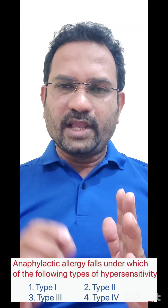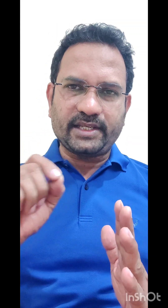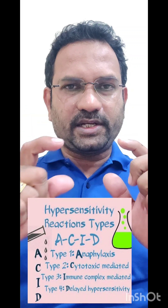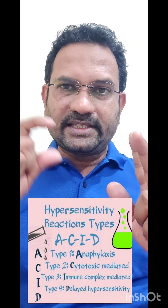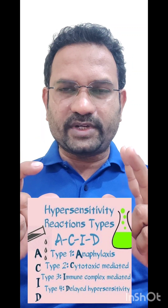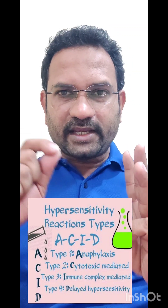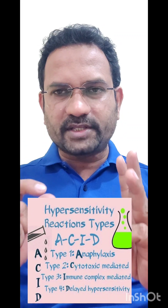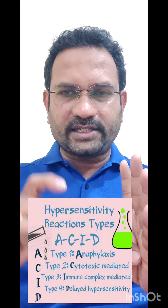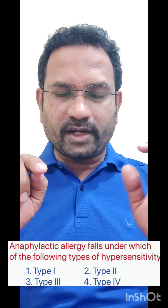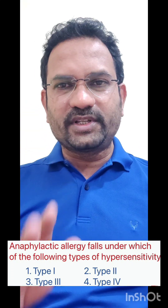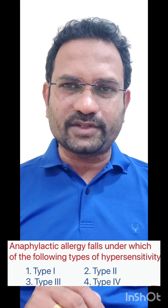There is a simple mnemonic to understand all these types of hypersensitivity — the mnemonic is ACID: A, C, I, D. Type 1 is A — allergic hypersensitivity. Type 2 is C — cytotoxic hypersensitivity. Type 3 is I — immune complex hypersensitivity. Type 4 is D — delayed or cell-mediated hypersensitivity. So the question is about anaphylactic shock, which falls under A, type 1. The answer for this question is type 1 hypersensitivity.